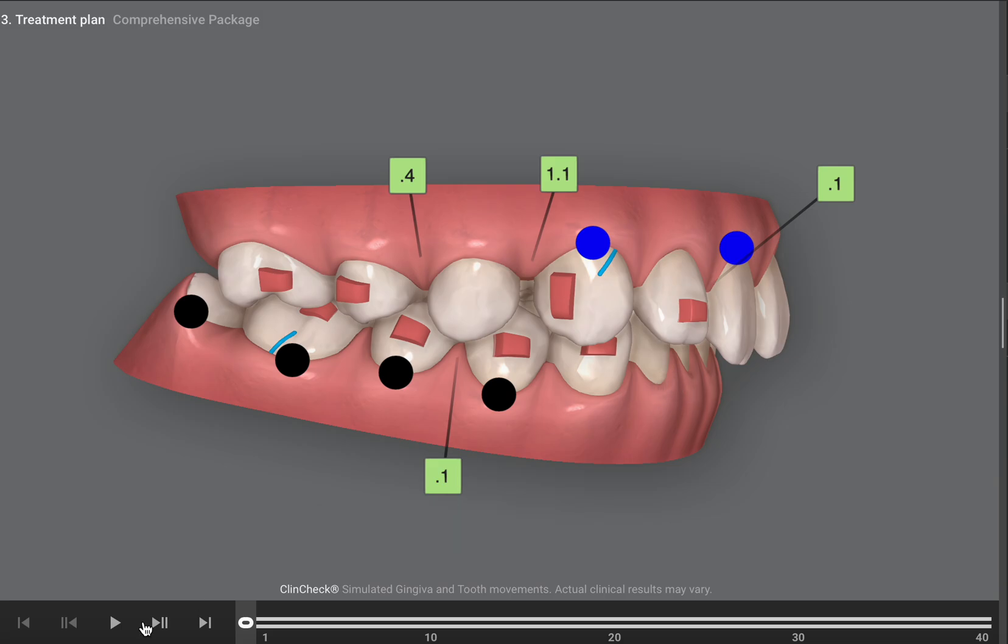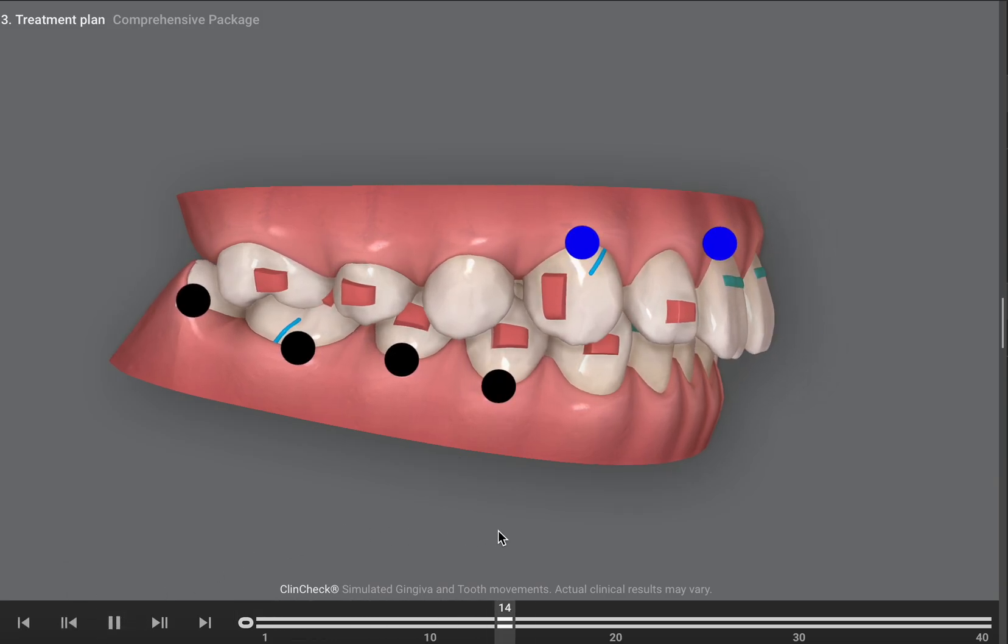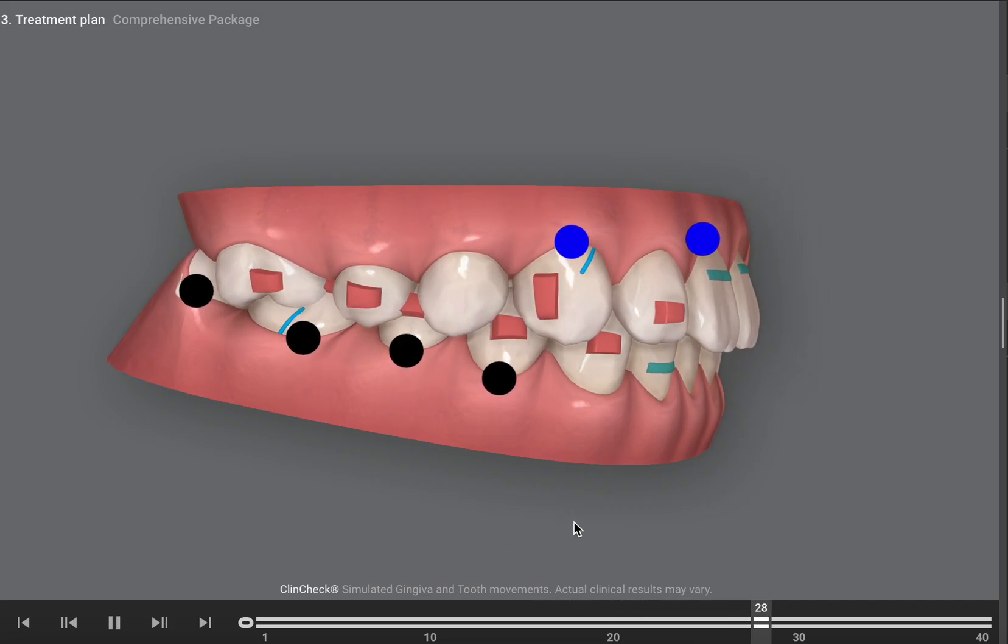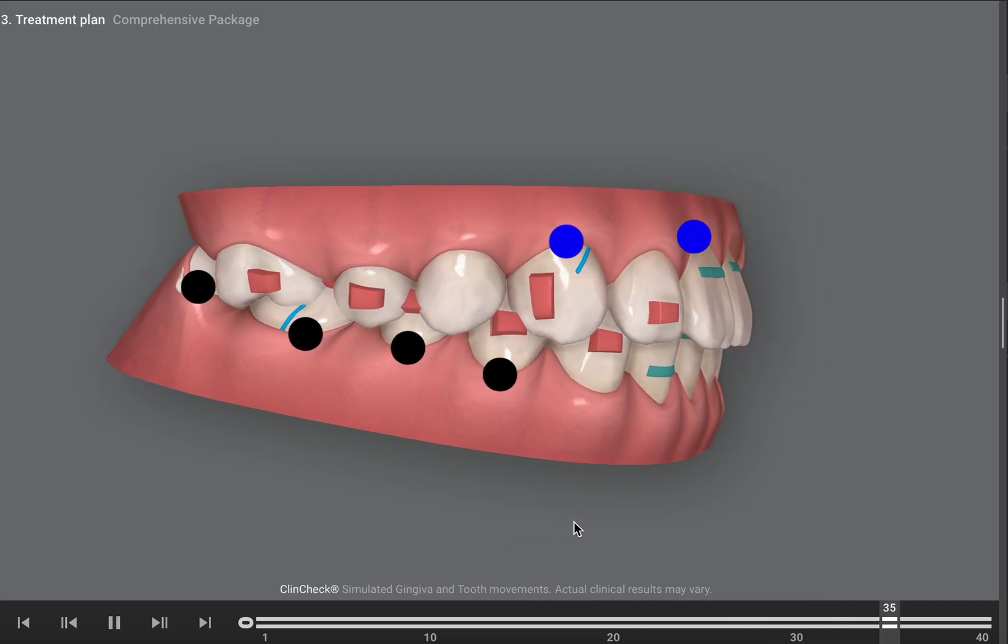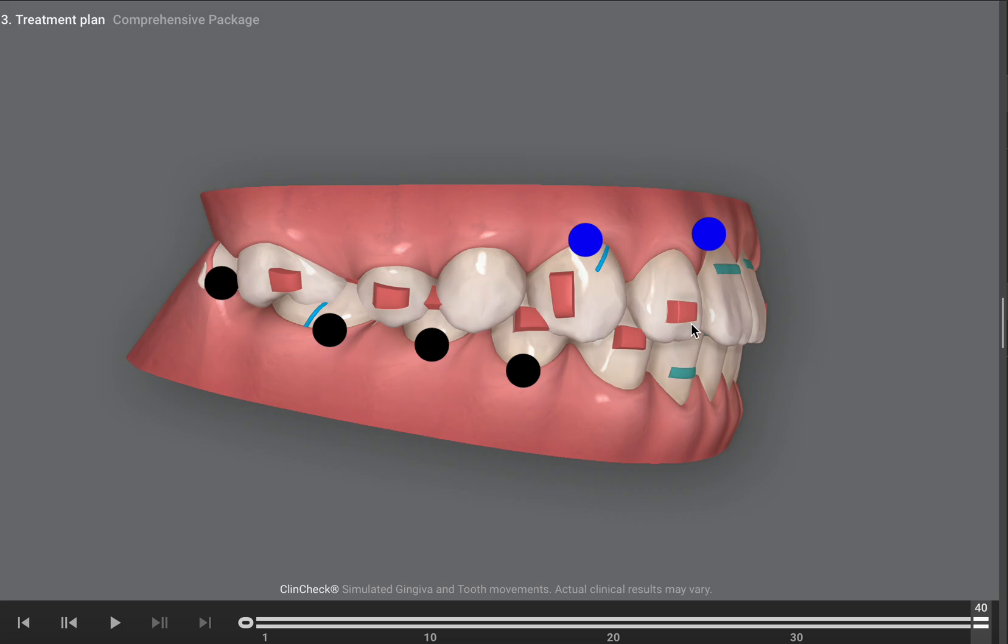One other thing is aligners are very good at incisor retraction. So if you don't watch your incisor angulation at the end, you will get some sort of retraction. So you have to really build in what we call lingual or palatal root torque. If you see the incisor angulation here, it is fantastic. This is how I want to finish a lot of my ideal class one cases.